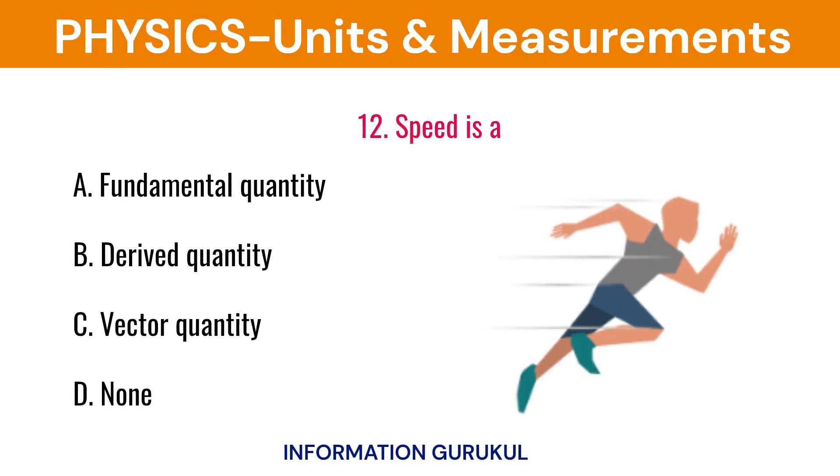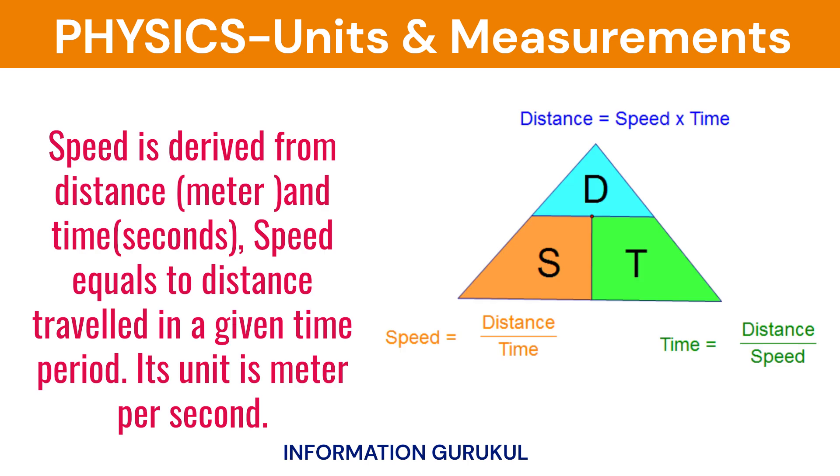Speed is a derived quantity. Speed is derived from distance and time; speed equals distance traveled in a given time period. Its unit is meter per second.